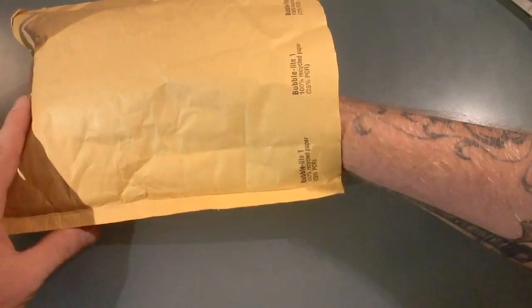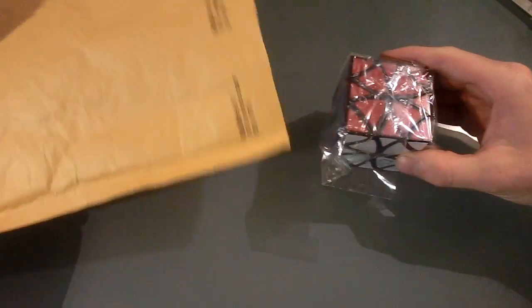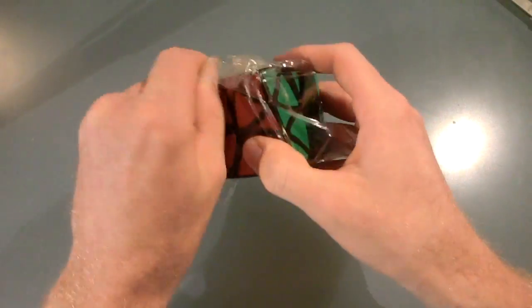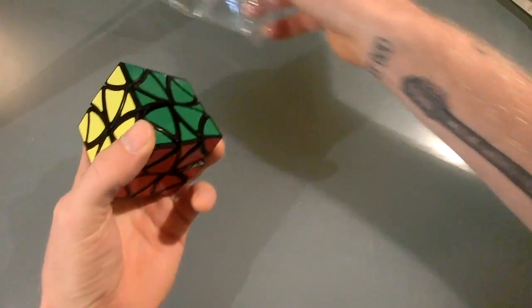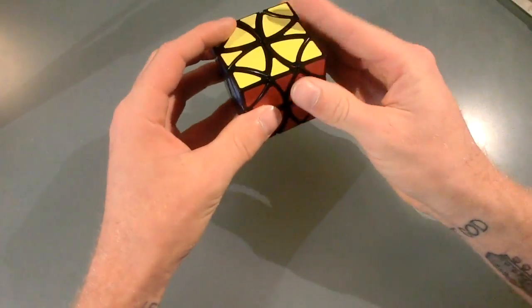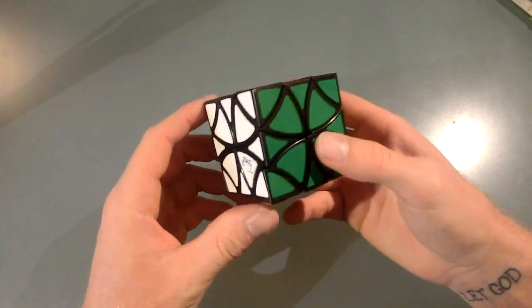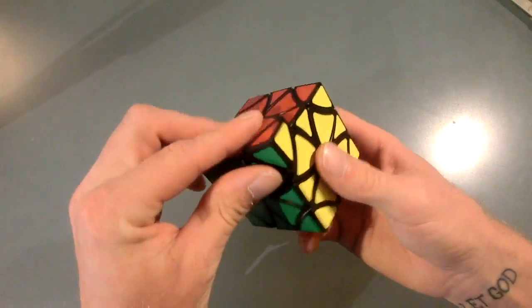So there's this one. And this is what I've been really excited about. I've wanted this cube for quite a while. It is the Curvy Copter. Now, you've all seen RedKB's video on it. That's the one I saw and I really wanted one ever since I saw that. It's a very cool puzzle, I think.